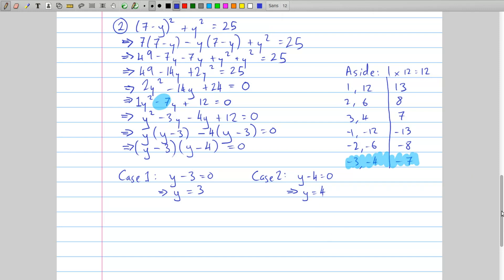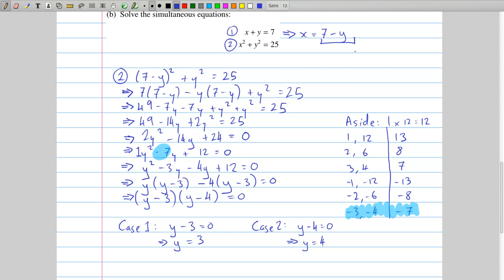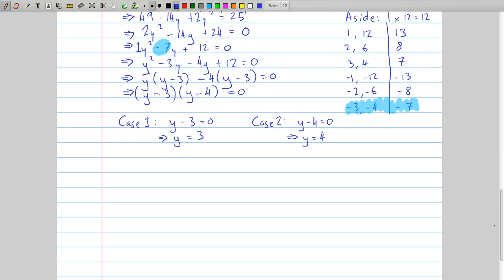And now that's not the entire question done, because we have to figure out what is x as well. And so we have this easy equation where x is 7 minus y. So we have x equals 7 minus y. If I say y is 3, as in case 1, I end up with x is 7 minus 3, which is 4. And I do the same with my other scenario. x is still 7 minus y, which is 7 minus 4 in case 2, where I said y was 4. And so x ends up being 3.